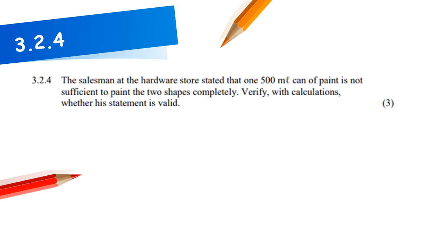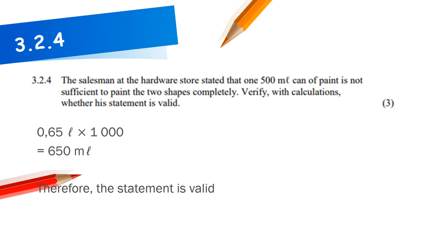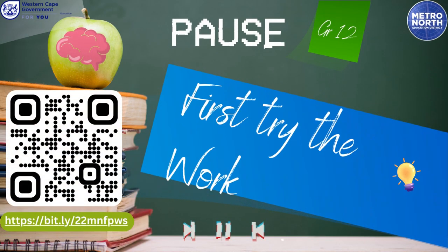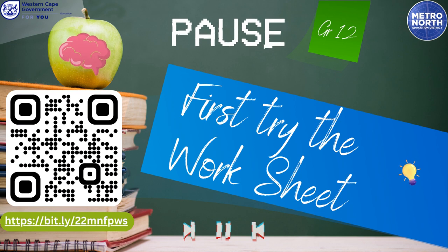The salesman states that one 500 ml can of paint is not sufficient to paint the two shapes. Verify with calculations: 0.65 liters × 1,000 = 650 ml. Since 650 ml > 500 ml, the salesman's statement is valid. Start with the worksheet now, then check the solutions afterward.